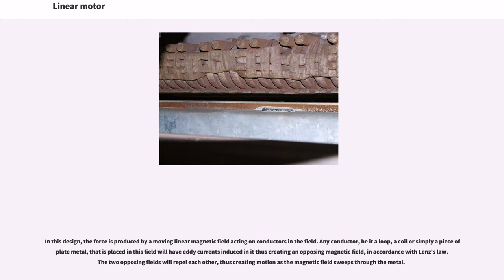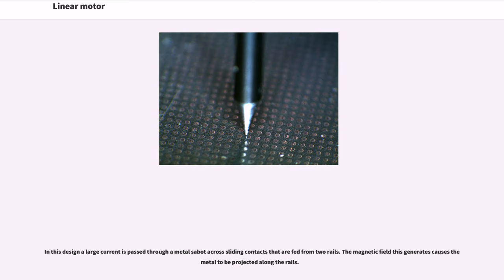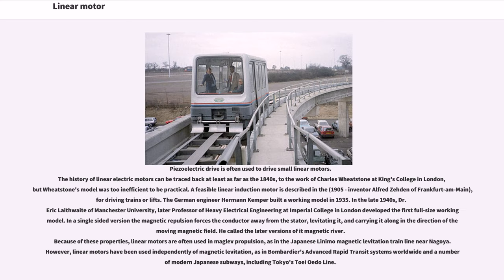In this design, a large current is passed through a metal sabot across sliding contacts that are fed from two rails. The magnetic field this generates causes the metal to be projected along the rails. Piezoelectric drive is often used to drive small linear motors.